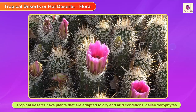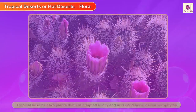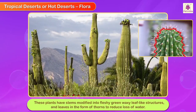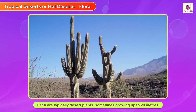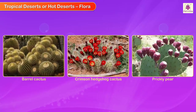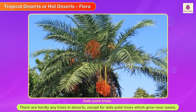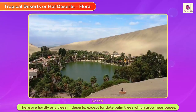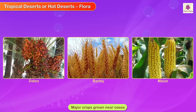Flora: Tropical deserts have plants adapted to dry and arid conditions called xerophytes. These plants have stems modified into fleshy green, waxy leaf-like structures and leaves in the form of thorns to reduce loss of water. Cacti are typical desert plants, sometimes growing up to 20 meters. Barrel cactus, crimson hedgehog cactus, and prickly pear are some other plants that grow here. There are hardly any trees except for date palm trees which grow near oases. Dates, barley, and maize are major crops grown near oases.